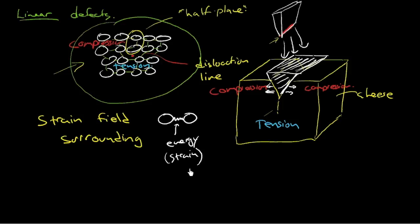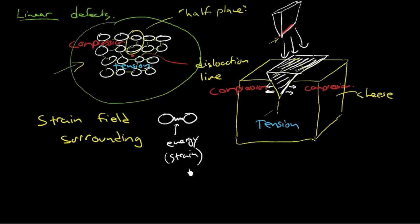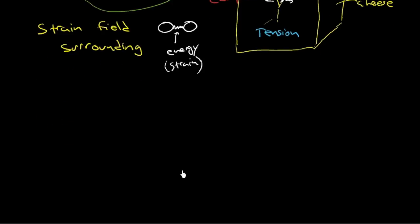So there's this strain field that surrounds the dislocation. And so then what happens is, well, what if you've got one dislocation? That's fine. But what if you've got many dislocations?